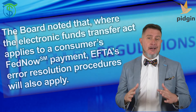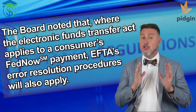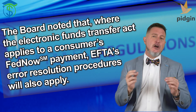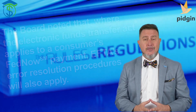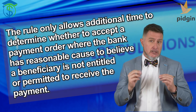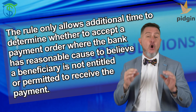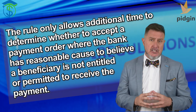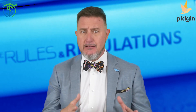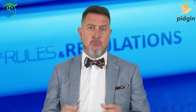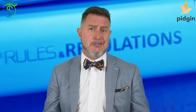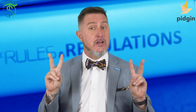The board also noted that where the Electronic Funds Transfer Act applies to a consumer's FedNow payment, EFTA error resolution procedures are going to also apply. The rule only allows additional time to determine whether to accept a payment order where the bank has reasonable cause to believe a beneficiary is not entitled or permitted to receive a particular payment. To preserve end-to-end speed, the board rejected broader approaches that would allow additional time at a FedNow participant's discretion or where a bank has reasonable suspicion rather than reasonable cause.